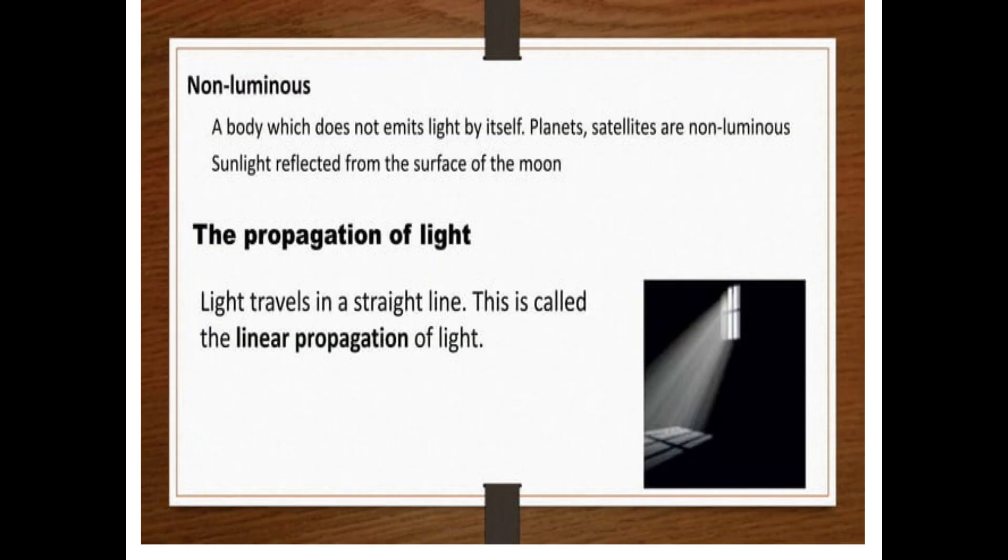Non-luminous. A body which does not emit light by itself, such as planets and satellites. These are non-luminous. Sunlight reflected from the surface of the moon.